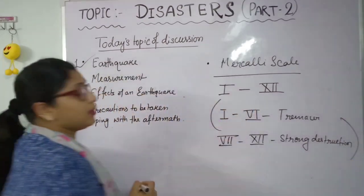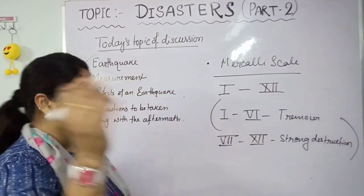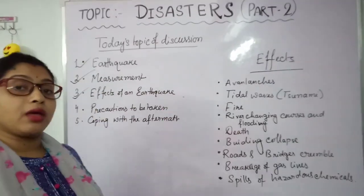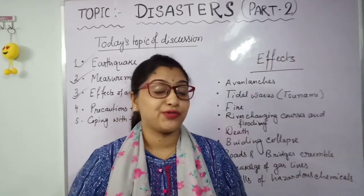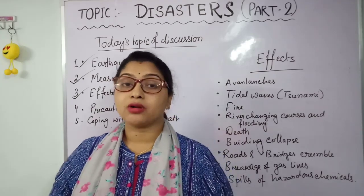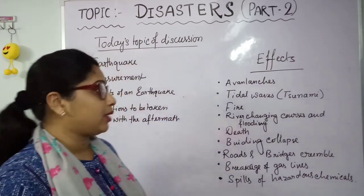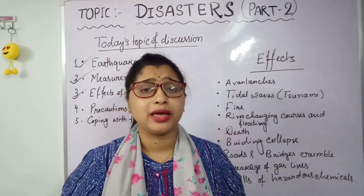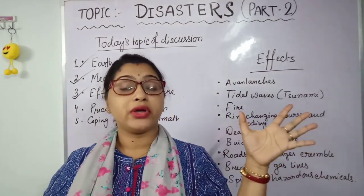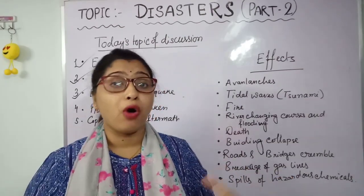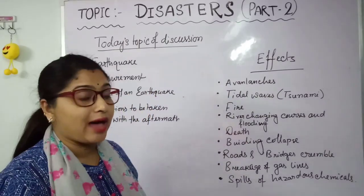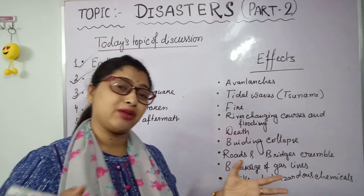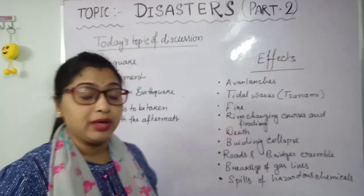Now we are going to know the effects of earthquake. Causes of many disasters lead to different kinds of damage and destruction — earthquake also has many bad effects on our life. The first effect is avalanches. Due to trembling, shaking, or vibration in hilly areas, ice together with soil and rocks can move downward — that is known as an avalanche. Sometimes trees can be uprooted and can also cause landslides.